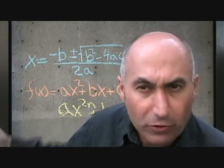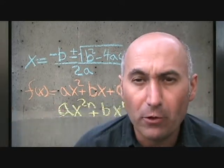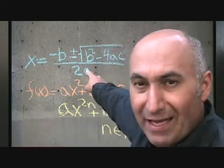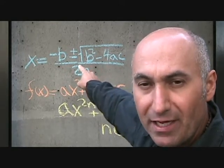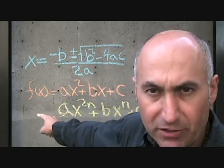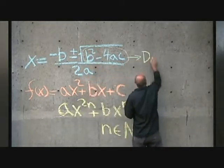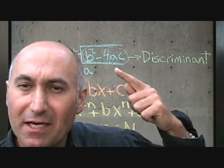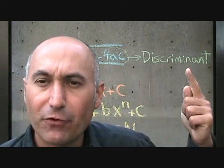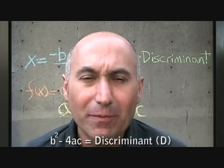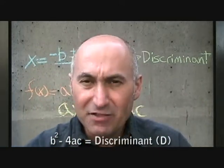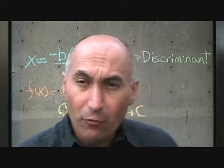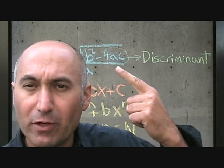One thing to keep in mind: inside the root symbol in the quadratic formula — that expression b squared minus 4ac — is called the discriminant. The discriminant gives us information about the nature of the roots for a polynomial function or equation. Right now we're focused on b squared minus 4ac, though discriminants exist for cubic and quartic functions too. It's a general term referring to what's inside the root symbol.